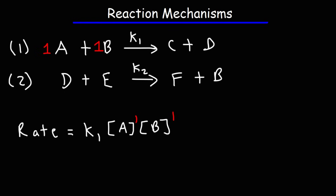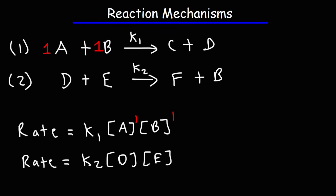For the second elementary reaction, the rate law expression is going to be K2 times the concentration of D times the concentration of E. That's how you write the rate law expression for a certain step in a reaction mechanism.